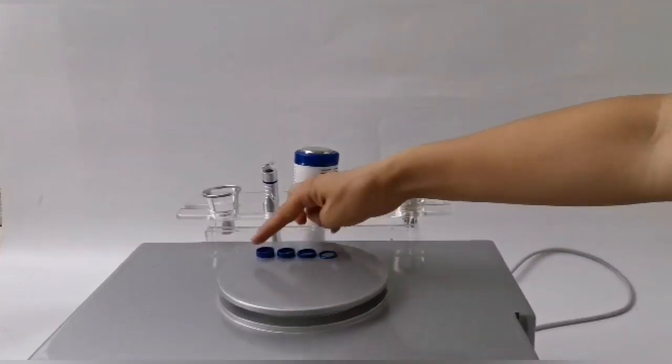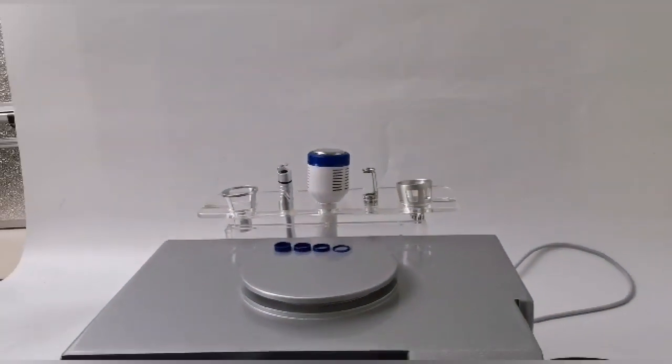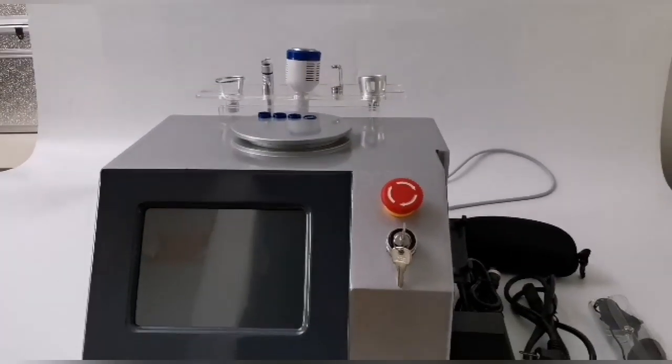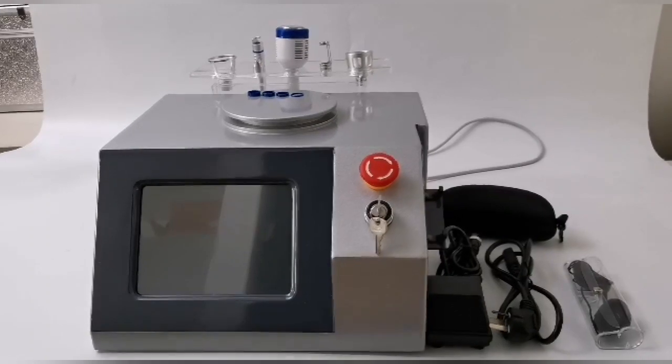This is the focusing ring, used to adjust the size of the spot, 0.2mm to 3mm. The tighter the focusing ring is, the bigger the spot is.